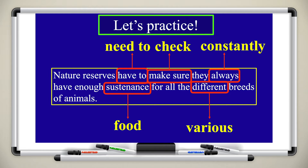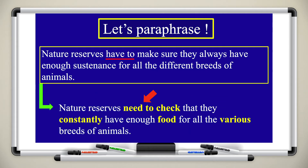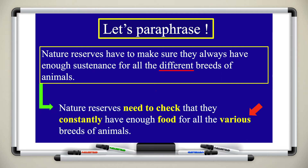'Different' has synonyms: diverse, several, and various. If we change these vocabulary items — using 'need to' instead of 'have to,' 'check' instead of 'make sure,' 'constantly' instead of 'always,' 'food' instead of 'sustenance,' and 'various' instead of 'different' — we get: 'Nature reserves need to check that they constantly have enough food for all the various breeds of animals.' Different words, but the meaning is intact.